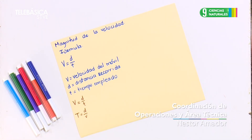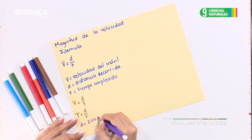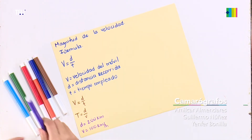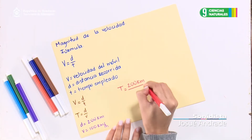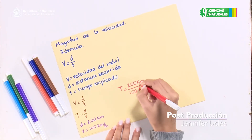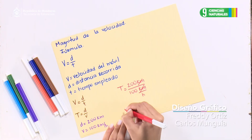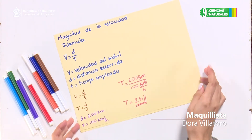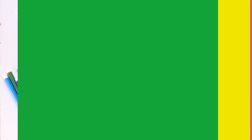Con los datos del ejemplo, nuestra distancia es de 200 kilómetros, el tiempo es lo que debemos calcular y la velocidad es 100 kilómetros por hora. Sustituimos de la siguiente manera: T es igual a 200 kilómetros entre 100 kilómetros por hora. Eliminamos la medida de kilómetros y dividimos 200 entre 100, quedándonos que T es igual a 2 horas. El automóvil necesita 2 horas para recorrer 200 kilómetros a una velocidad de 100 kilómetros por hora.